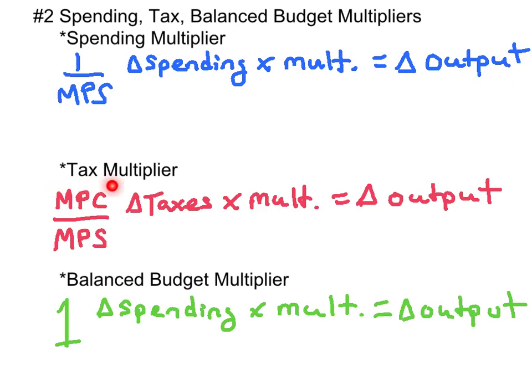We use the tax multiplier when we want to calculate how a change in taxes affects overall output. It's the marginal propensity to consume divided by the marginal propensity to save. If there's an increase or decrease in taxes, the output is going to change by a multiplied amount. The change in taxes times the tax multiplier will give you the change in overall output.